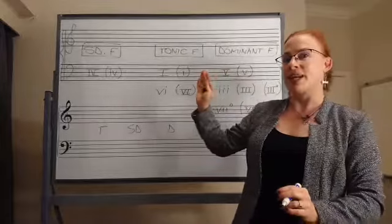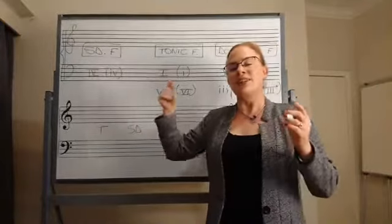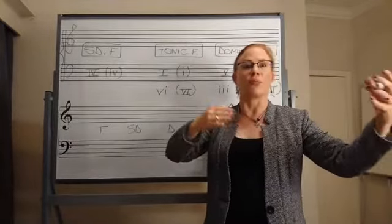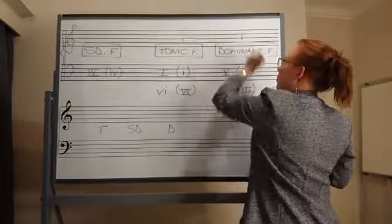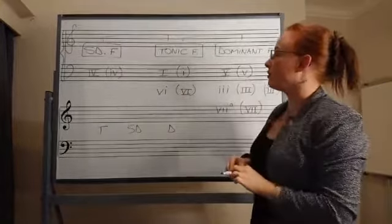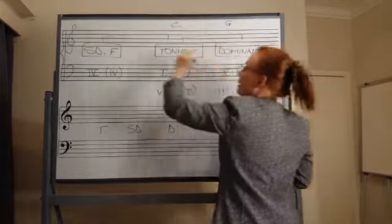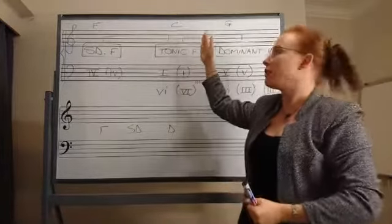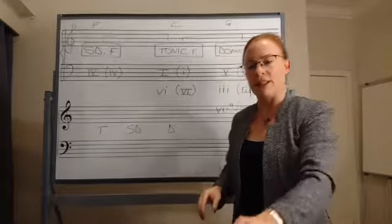I'm going to explain it slightly differently — I'm going to put the sub-dominant function on that side — so that you can understand why we have the tonic, the sub-dominant, and the dominant function. The relevance is that this is an interval of a fifth apart, and to the other side, this is also an interval of a fifth. For example, in C major, the dominant would be G and the sub-dominant would be F. From C to G is a perfect fifth, and from F to C is also a perfect fifth. That's basically where it comes from.